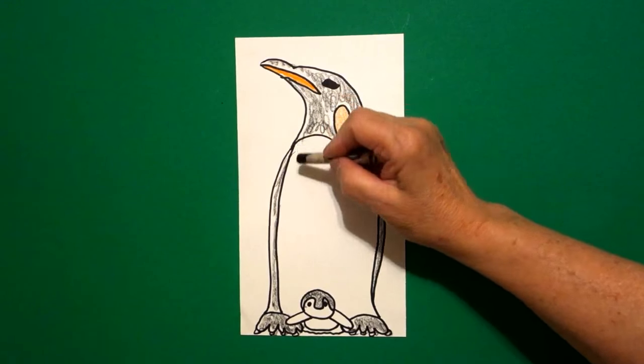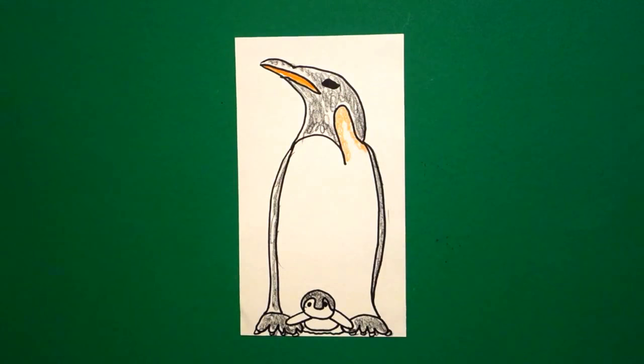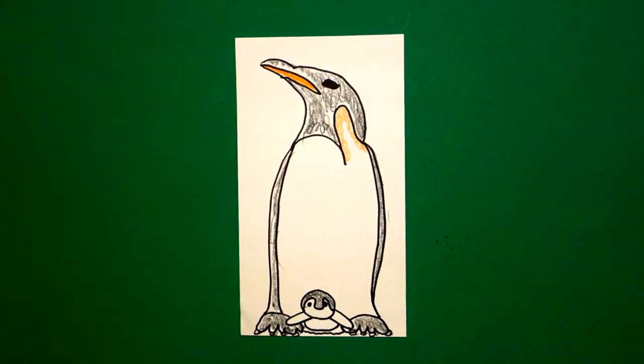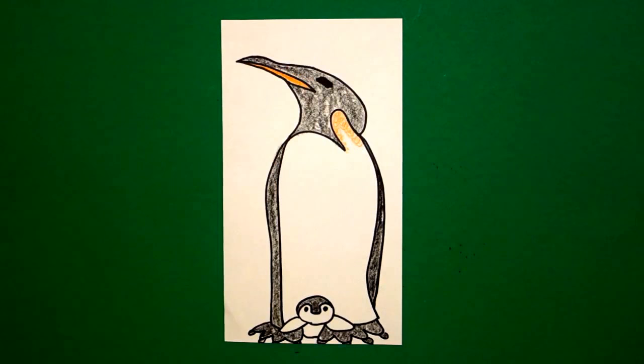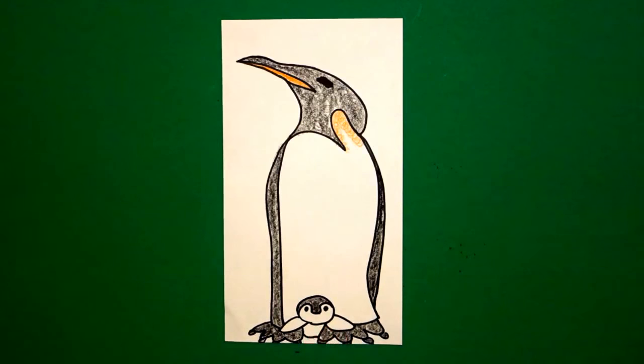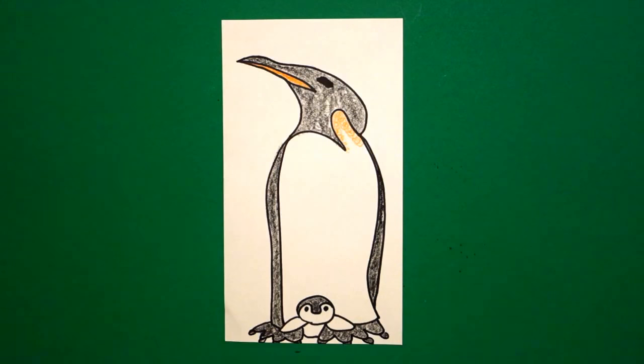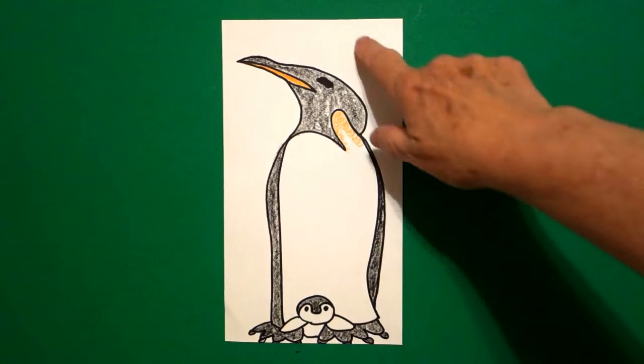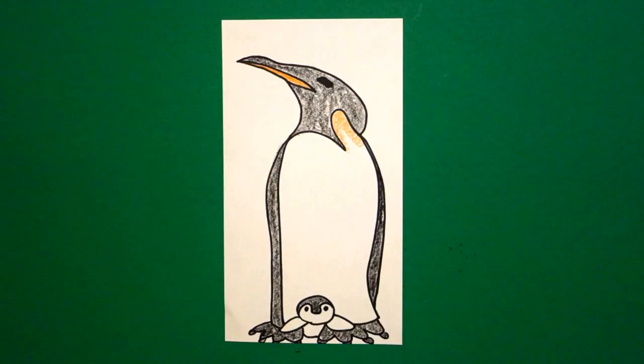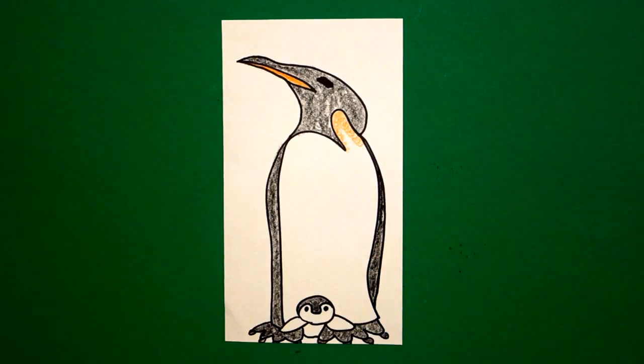That's it. Let's see what these guys look like all colored in. Here's Papa Penguin with baby, all colored in. This would be great for an animal unit or for Father's Day cards. I'd love to see it all cut out and maybe put on some ice blue paper for a contrast.